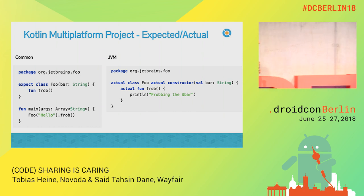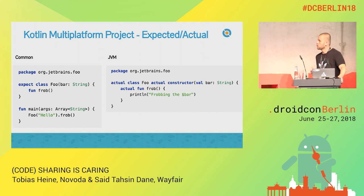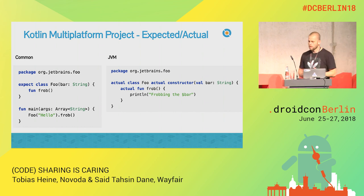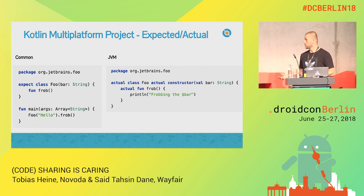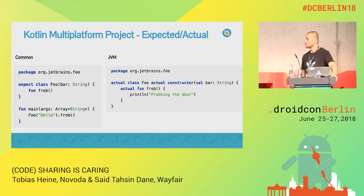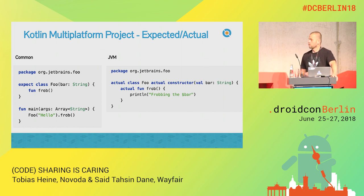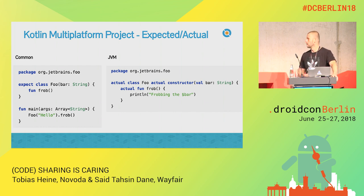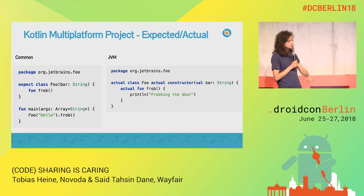This also means that on your platform module you don't have to construct your whole application. In your common part, you just have access to abstractions. But here it's different — you can, in your common code, construct the objects expected by the platform modules, and then on the platform you can use these dependencies as you want.